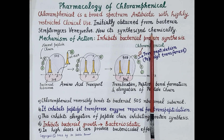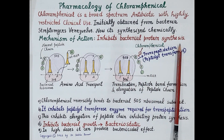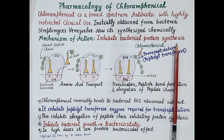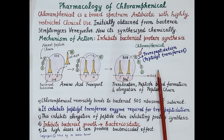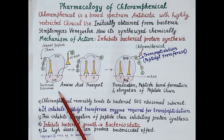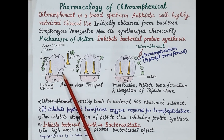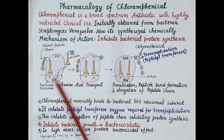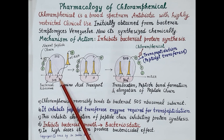Chloramphenicol is bacteriostatic and inhibits bacterial protein synthesis. To understand its mechanism of action, let's discuss steps involved in bacterial protein synthesis. A bacterial ribosome consists of two subunits: the 50S subunit and the 30S subunit. Messenger RNA (mRNA) is produced from DNA and carries codons that code for specific amino acids.